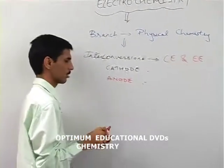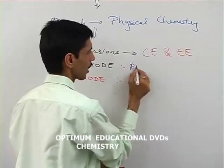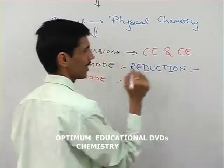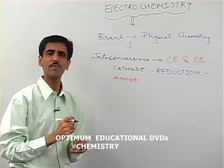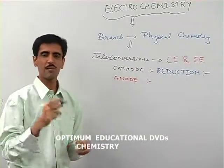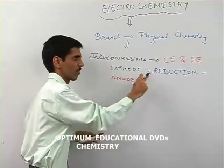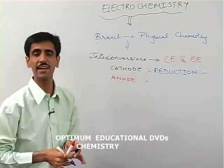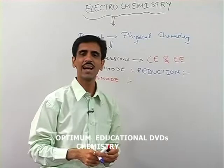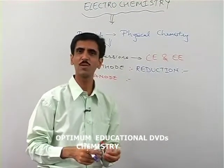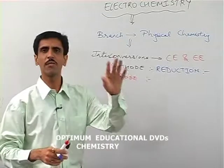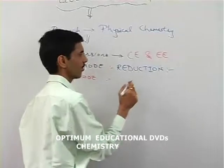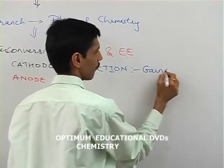Remember: at the cathode, reduction always takes place. Now, reduction can be defined in many ways, but as far as this chapter is concerned, since one of the energies involved is electrical energy, and electrons are responsible for electrical energy, we define concepts on the basis of electrons. So reduction is nothing but the gain of electrons.